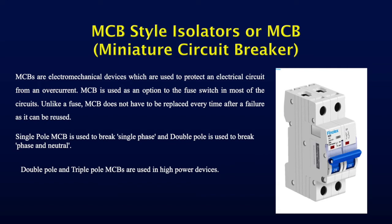Different types of MCBs are available: single pole, double pole and triple pole. In domestic single-phase connection, there is one phase and one neutral. If only the phase wire is connected to the MCB, it is a single pole. If both phase and neutral are controlled by the MCB, it is double pole. For three-phase connections, a triple pole MCB is used.